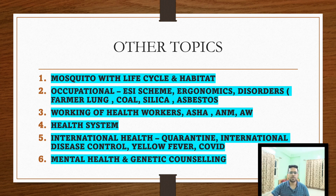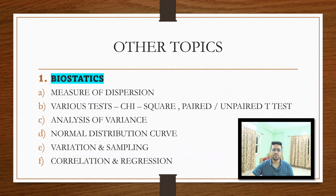Topics to cover include: mosquito life cycle; from the occupational health chapter — ESI scheme, ergonomic disorders like farmer's lung, coal silicosis, asbestosis; working of health workers like ASHA, ANM, and Anganwadi workers; health system topics like COVID quarantine and international disease control; and mental health and genetic counseling, which is very important these days.